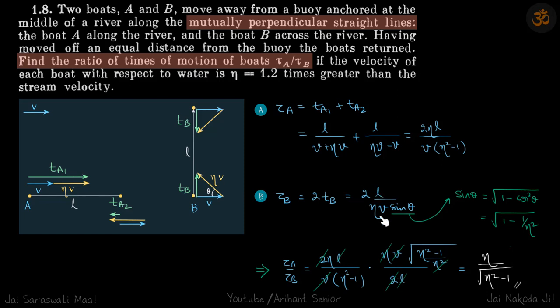So for the whole journey, two times L upon eta v sin theta. And sin theta we can get from the vector triangle. So sin theta is square root of 1 minus cos squared theta, and cos theta is v by eta v, which is 1 by eta. So sin theta is root of 1 minus 1 by eta square.